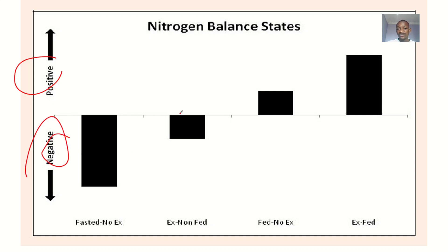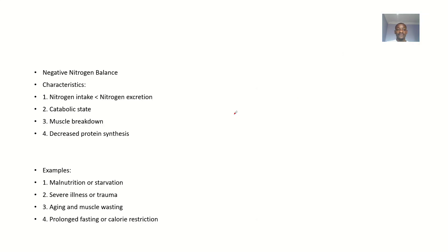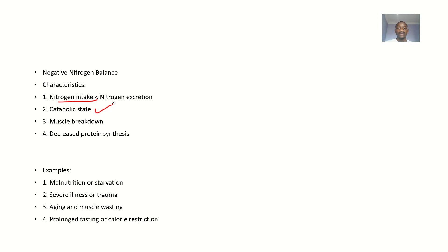Negative nitrogen balance is when nitrogen intake is less than nitrogen excretion. It occurs mostly in catabolic states, where there is severe breakdown — metabolism running excessively — so excretion is much greater than intake. This leads to muscle breakdown and decreased protein synthesis, and is usually related to disease or abnormal conditions.